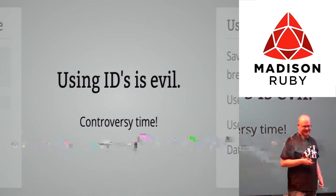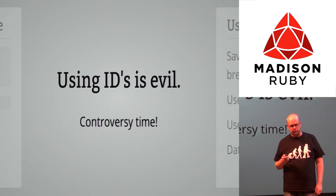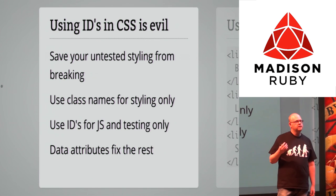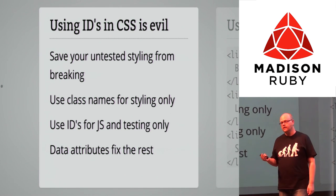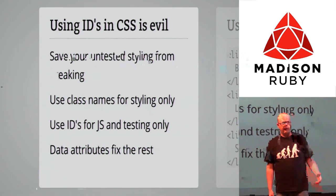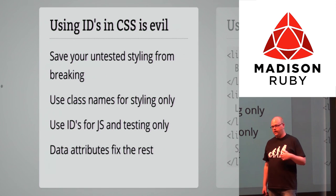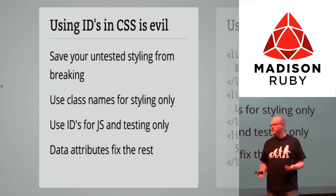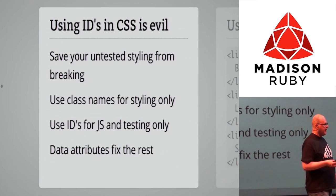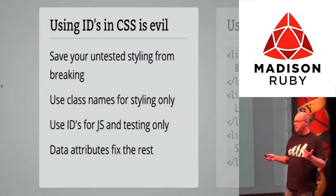I think using IDs in CSS is evil. I've had experiences where someone changed IDs to fix a test or some JavaScript and the styling broke — you have excellent testing for your HTML structure and behavior, but styling is largely untested. If something breaks and there's just a small icon missing, people tend not to notice, and it's really hard to detect with automated testing. That's why I use class names for styling and IDs for JavaScript.